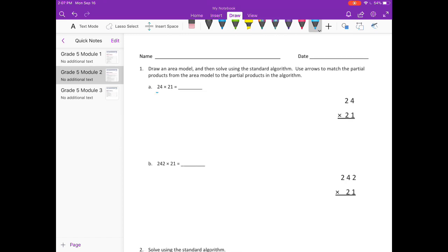So we have 24 times 21. 24 is a 2-digit number and 21 is a 2-digit number. So I know that my area model is going to be a 2 by 2.